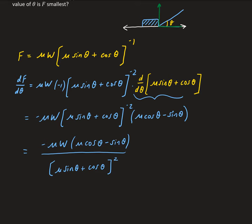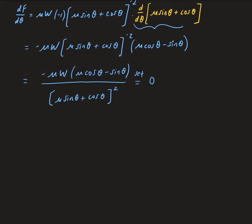Now we need to set this equal to zero to find our critical value. Solving this is basically just solving for the numerator factor, because mu and W are constants and are positive, and the denominator — which is squared — is always positive. So if you multiply both sides by the denominator, you're left with what's in the yellow box: mu times cosine theta minus sine theta equals zero.